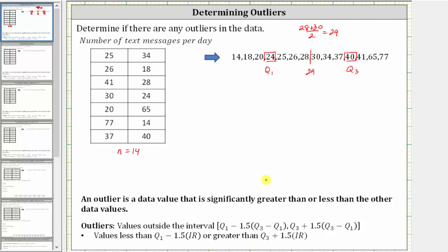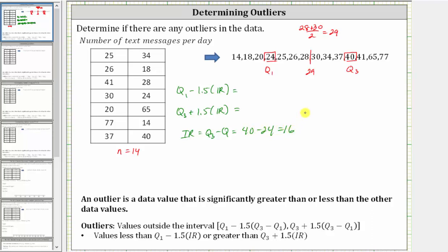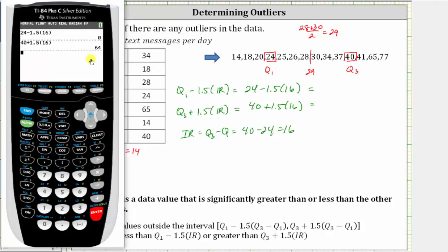Now to determine if we have any outliers, we need to determine the values of Q1 minus 1.5 times the interquartile range, as well as Q3 plus 1.5 times the interquartile range. The interquartile range is Q3 minus Q1, which is 40 minus 24, equal to 16. So Q1 minus 1.5 times the IQR is 24 minus 1.5 times 16, and Q3 plus 1.5 times the IQR is 40 plus 1.5 times 16. Computing these two values gives us 0 and 64.